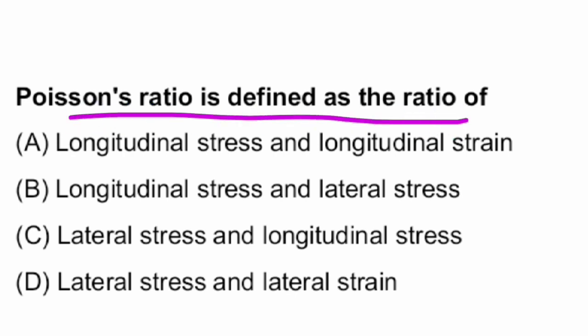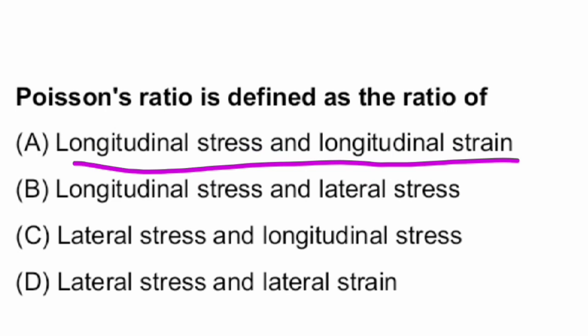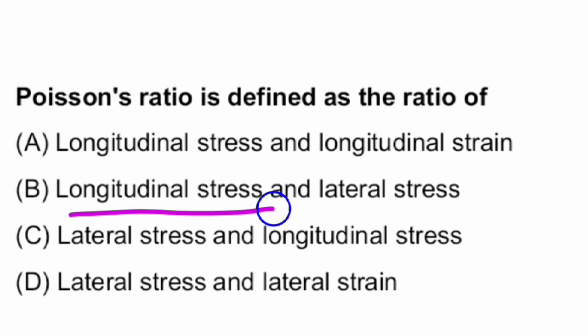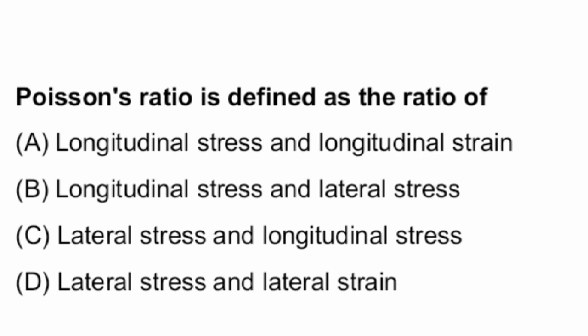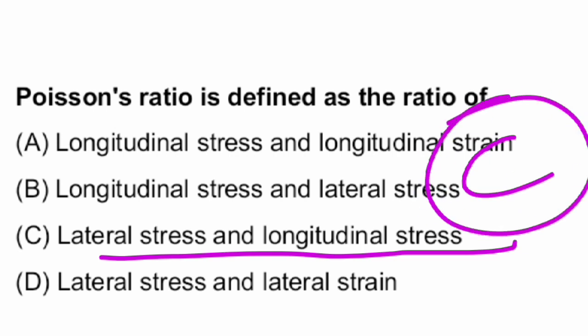What is Poisson's ratio? Poisson's ratio is defined as the ratio of lateral strain and longitudinal strain — that is option C. Poisson's ratio is defined as the ratio of lateral stress and longitudinal stress.